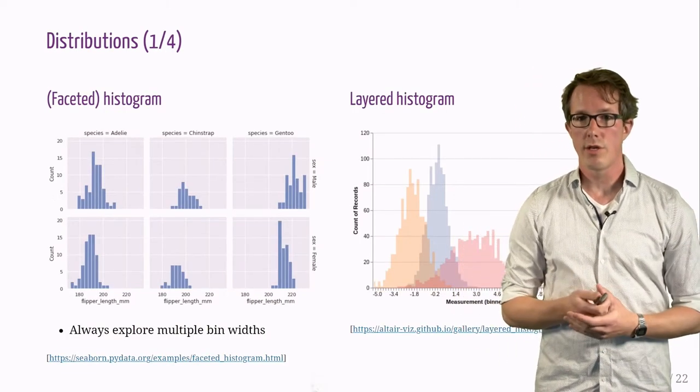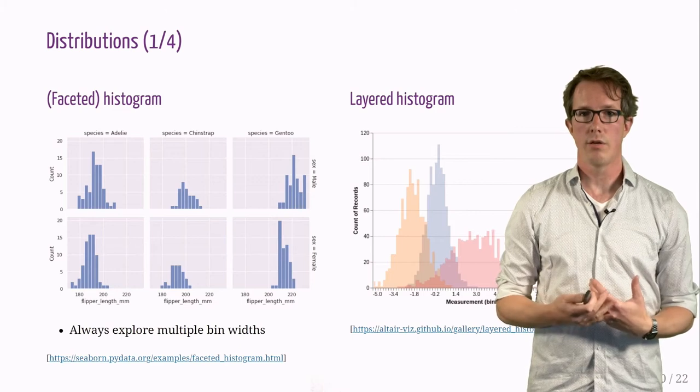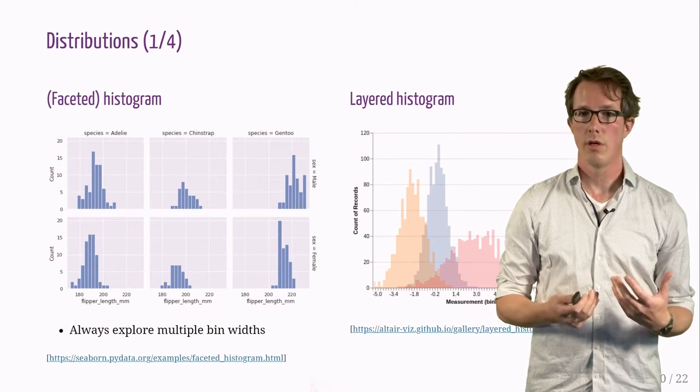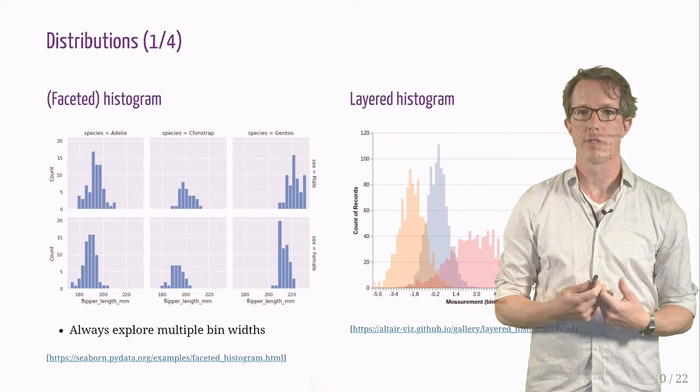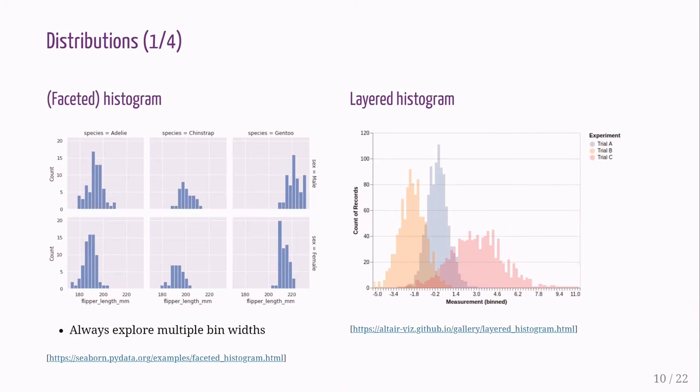Another category of visualizations are distributions. Here we show histograms faceted on the left side of the slide, in other words, arranged in tiles. On the right side, we see them layered. When plotting histograms, always explore multiple bin widths to check which one represents best the data.